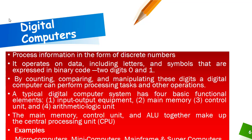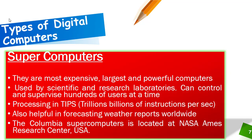The processing of a digital computer is based on binary code. A typical digital computer system has four basic functional elements: first, input and output equipment; second, main memory; third, control unit; and fourth, arithmetic logic unit (ALU). The main memory, control unit, and ALU together make up the central processing unit. Examples include microcomputers, mini computers, mainframe computers, and supercomputers.